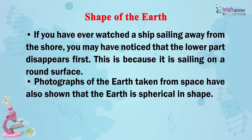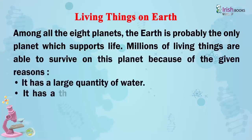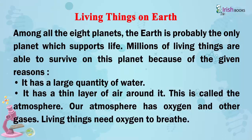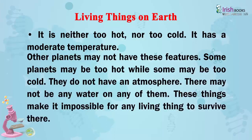Photographs of the earth taken from space have also shown that the earth is spherical in shape. Living things on Earth: among all the eight planets, the earth is probably the only planet which supports life. Millions of living things are able to survive on this planet because it has a large quantity of water, a thin layer of air called the atmosphere containing oxygen and other gases, and a moderate temperature — neither too hot nor too cold. Other planets may be too hot or too cold, have no atmosphere, and no water, making it impossible for any living thing to survive there.